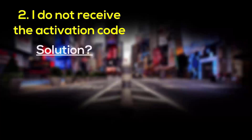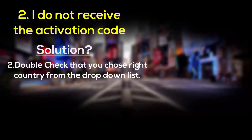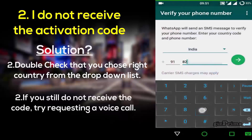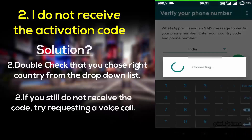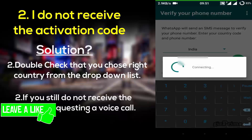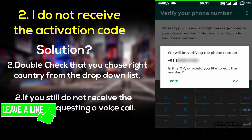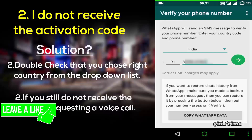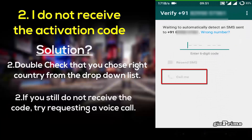But the automatically generated message with your activation code may never come through. So first of all double check your number and country code — for example, I'm from India so my country code is +91. If you still do not receive the message, try the 'Call Me' option. This way you will have the code read to you by a computer over the phone.